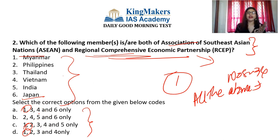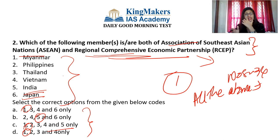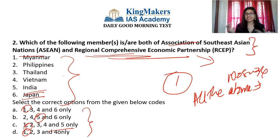The answer is option D: only 1, 2, 3, and 4 are correct — Myanmar, Philippines, Thailand, and Vietnam. India and Japan are not members of ASEAN. As discussed yesterday, ASEAN has 10 member states, and India is not among them. Japan, similarly, is not part of ASEAN. Though India has a cordial relationship with ASEAN nations and is involved in related agreements, it is not formally a member of the Association of Southeast Asian Nations.